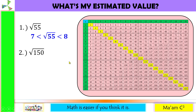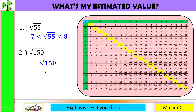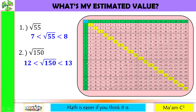Number 2 is square root of 150. 150 is somewhere in between 144 and 169. So square root of 150 is less than the square root of 169, which is 13, but greater than the square root of 144, which is 12.